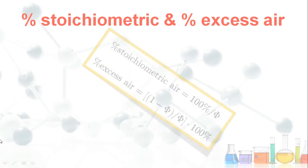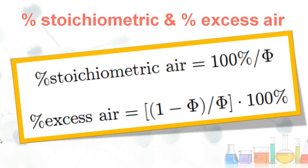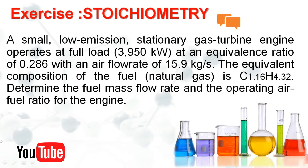The percentage of stoichiometric air can be found as 100 divided by the equivalence ratio φ. The percentage of excess air in the fuel-air mixture is found using the relation: (1 − φ) / φ × 100.